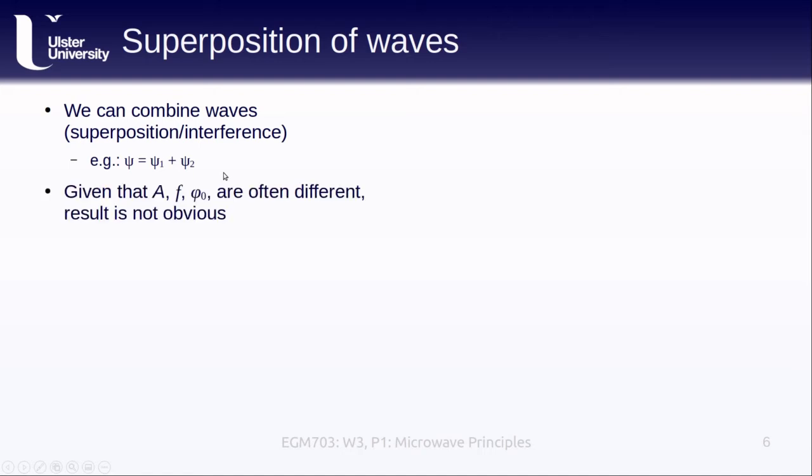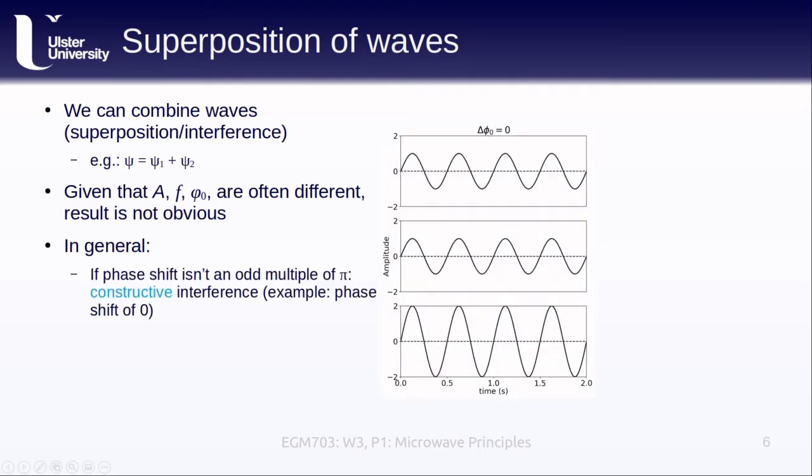What this actually looks like, however, may be very difficult to visualize because the amplitudes, frequencies, and phase shifts of the different waves are often very different. In general, we can talk about two main types of interference based on the phase shift between the two waves. If the phase shift is not an odd multiple of pi, then we have something called constructive interference.